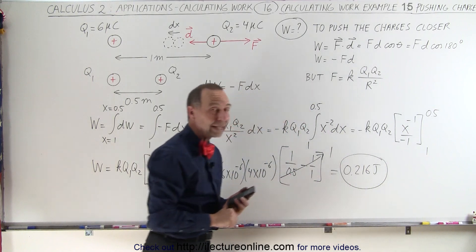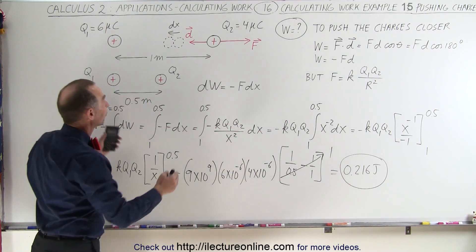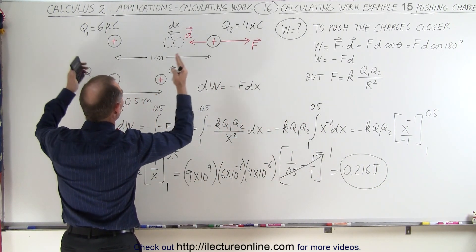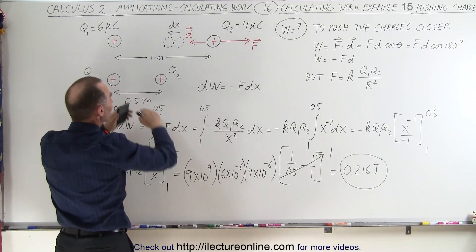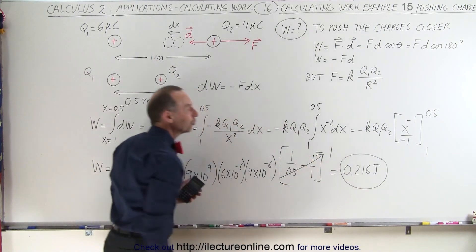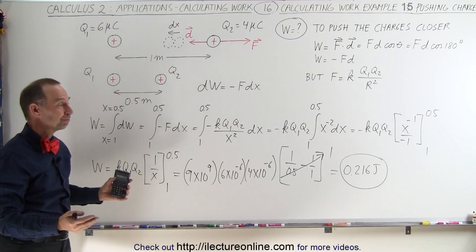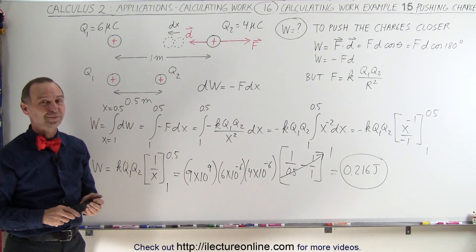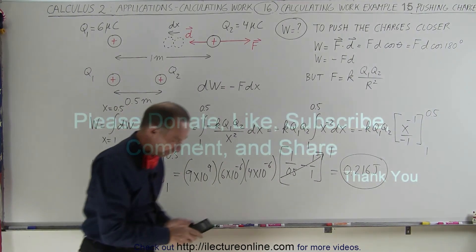And that's the amount of work it would take to push those two charges from a distance of 1 meter to a distance of 0.5 meters, increasing the potential energy of the two charges by 0.216 joules. And that's how that's done.